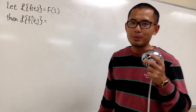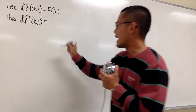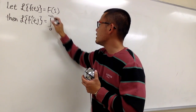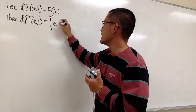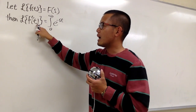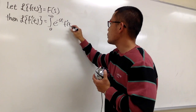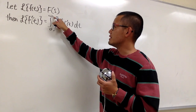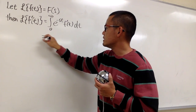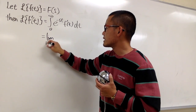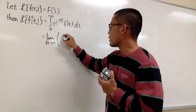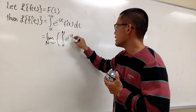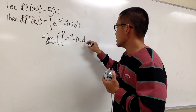We don't know what this is, so we have to go back to the fundamental — that means we have to use the definition. This is the improper integral from 0 to infinity, and we will have e to the negative st times f prime of t, and then dt. We can handle the infinity by writing this as the limit as capital N goes to infinity, integrating from 0 to N of e to the negative st times f prime of t dt.